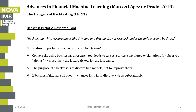An aspect the author emphasizes is that a backtest is not a research tool. He introduces what he calls the second law of backtesting: backtesting while researching is like drinking and driving — do not research under the influence of a backtest. Feature importance is a true research tool: this is what you do ex-ante when constructing a model that will become your investment strategy.